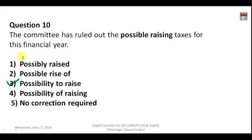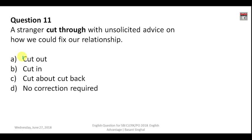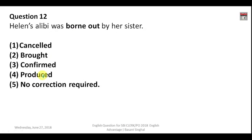Question number eleven: 'A stranger cut through with unsolicited advice on how we could fix our relationships.' 'Cut through' here means he interrupted. To convey the meaning of interrupting and barging in, the correct phrasal verb is 'cut in', or you can say 'butt in'. So the correct answer is B — cut in. 'Unsolicited' means unwanted or uncalled for.